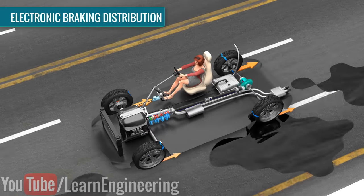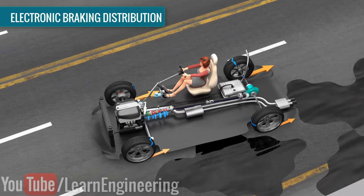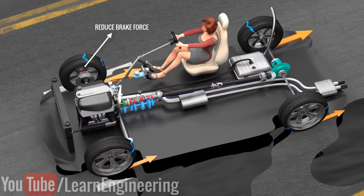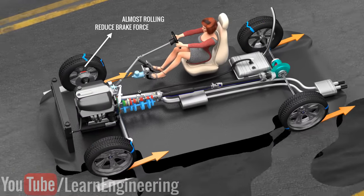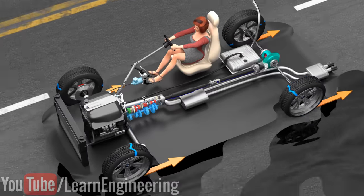In EBD, yaw rate of the car and the relative slip of each wheel is measured. Just by reducing the brake pressure on the wheels with higher grip, we will be able to reduce the frictional force produced by these wheels. This will keep the yaw torque and the whole car under control.